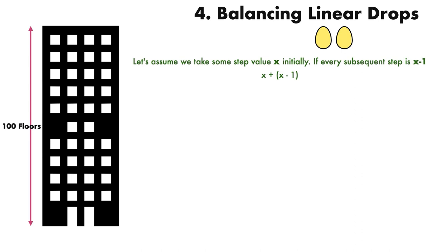If we drop our first egg from floor x, the linear portion is x-1. If the egg doesn't break on the first drop, our drop count increases by 1, so we remove a drop from our floor-to-floor drop count. The next drop should be from x-1 floors up. We continue removing one floor until we only have one floor to check. So the expression becomes x + (x-1) + (x-2) + ... + 1, which is the sum of n natural numbers, calculated using the formula x(x+1)/2.